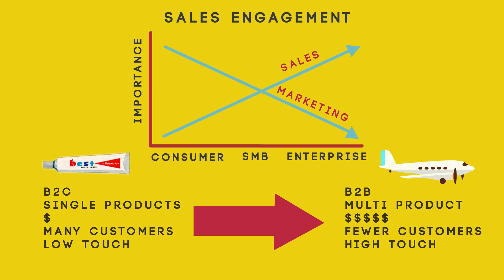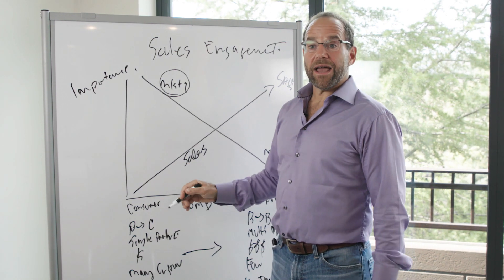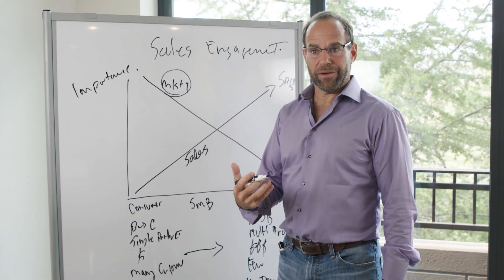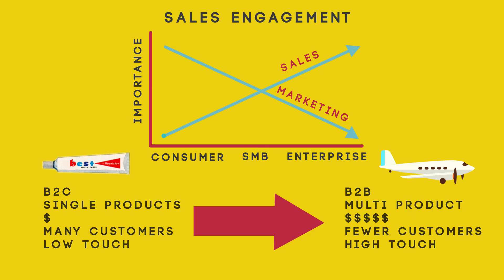How does this apply to technology? If you have a consumer-oriented or freemium product, you'll want to spend little to no money on sales. The marketing cost is effectively the features you give away for free — that becomes the marketing expense. You may also do additional marketing through user group events or search advertising, so you'll spend more there.